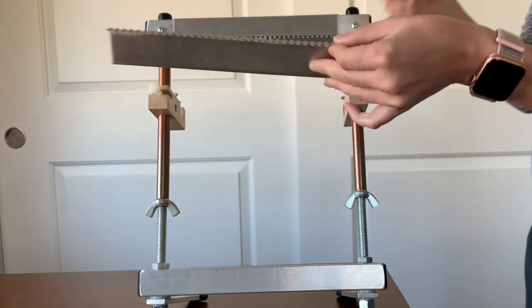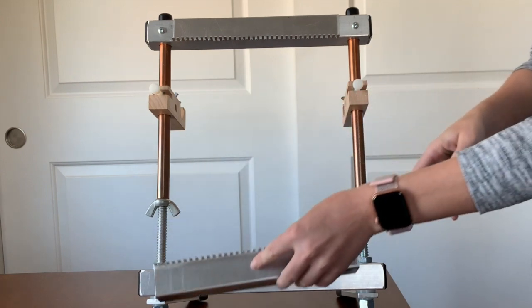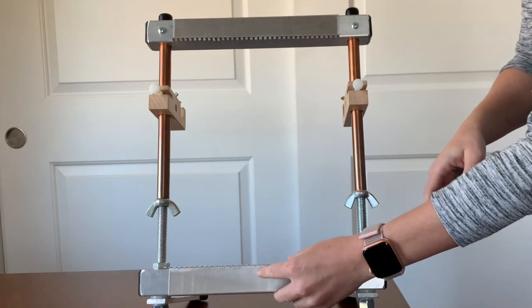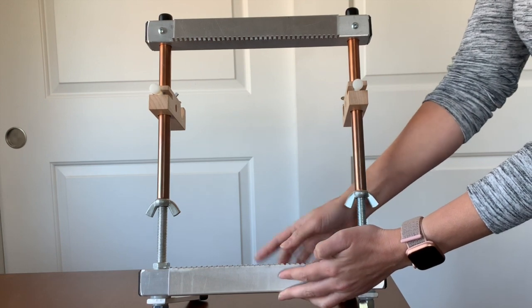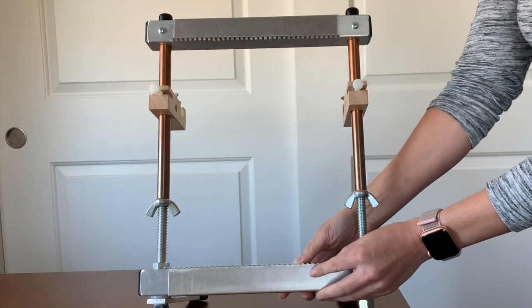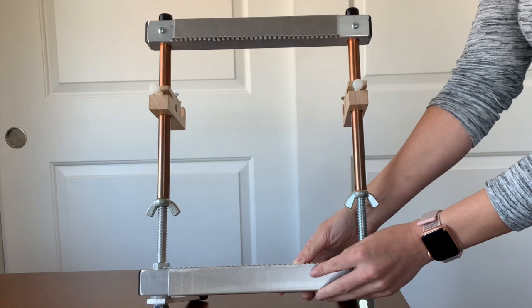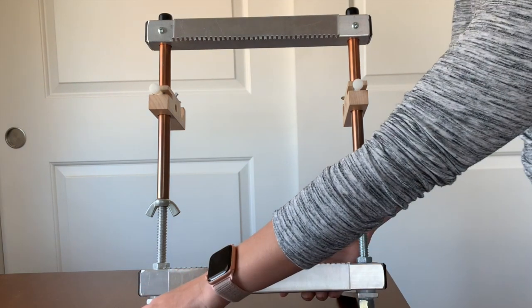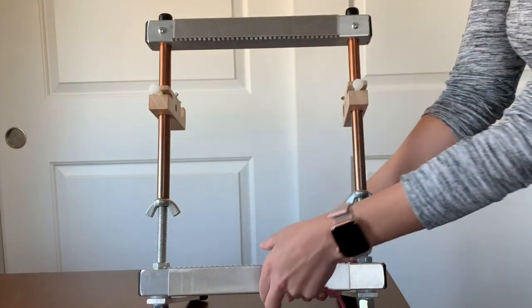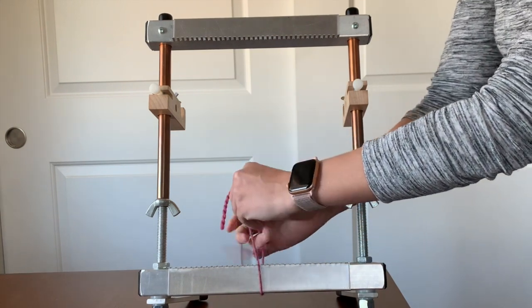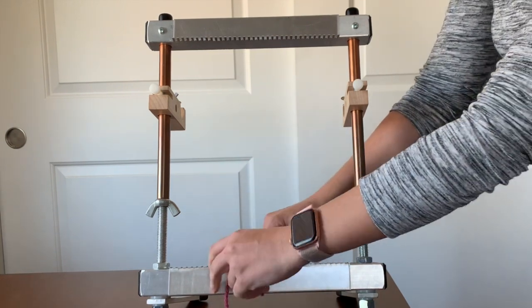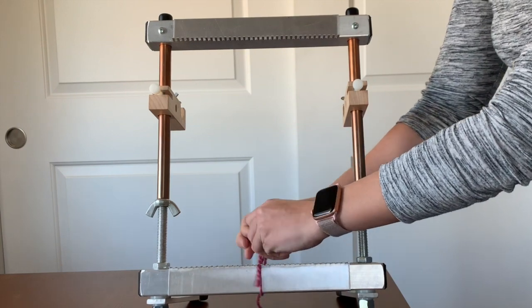Then take another comb and place it on the bottom beam of the loom so the tines are at the top of the bottom beam and again facing towards you. Now this comb will be a little bit loose while you're warping, so all you need to do is take a piece of string and just temporarily tie that on there.